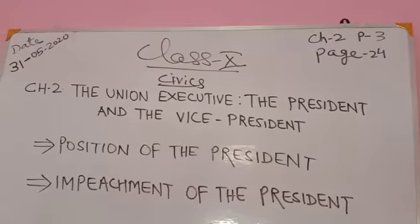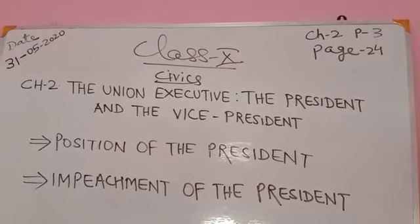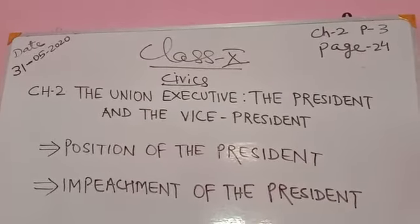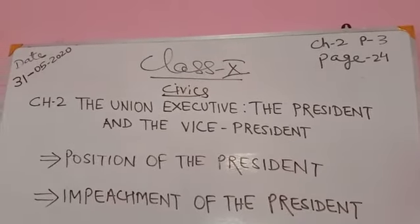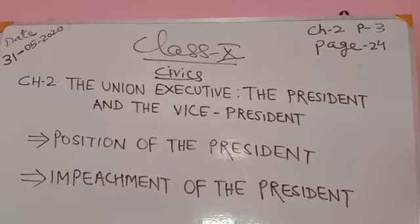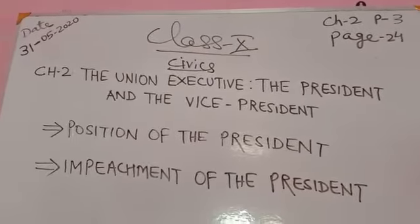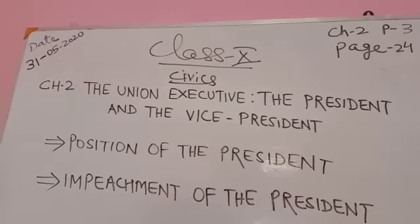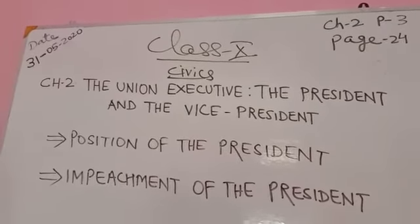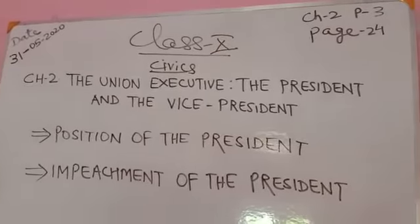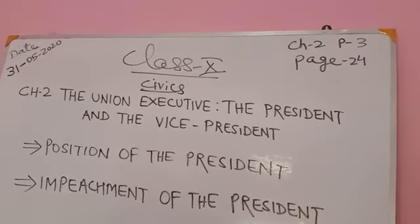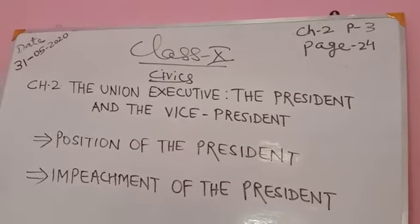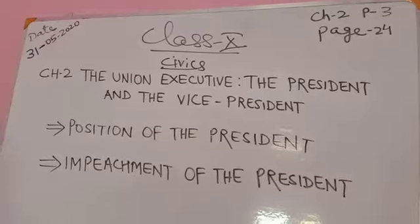The president uses his discretion when there is no clear-cut majority in the Lok Sabha and he has to choose a prime minister among the different leaders. When a prime minister with no majority fails to secure a majority in the Lok Sabha, by refusing assent to bills or sending them back for reconsideration, the president occupies a position of dignity and acts as a guide of the government in times of crisis — such as the death of the prime minister or power struggles among leaders in a coalition government.